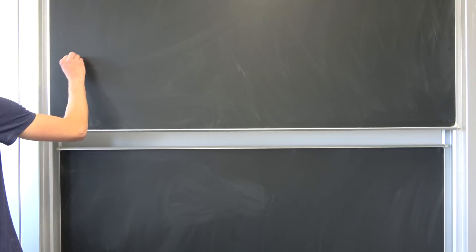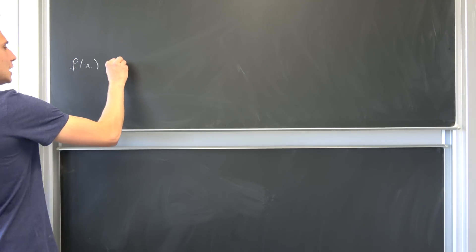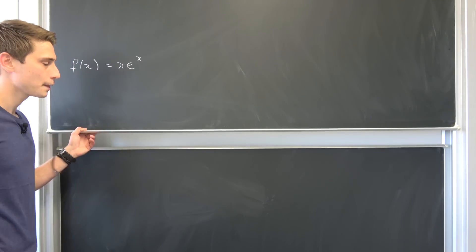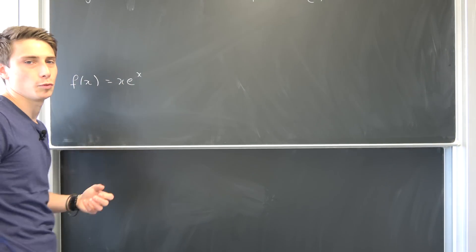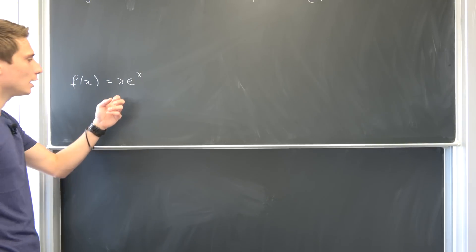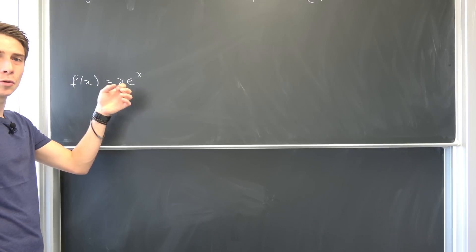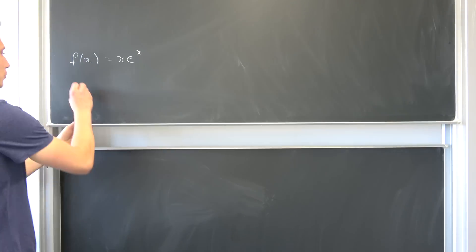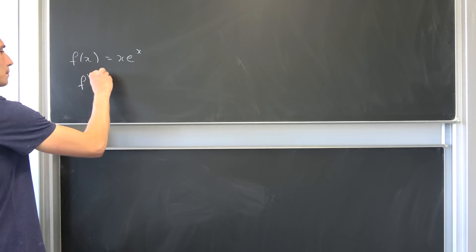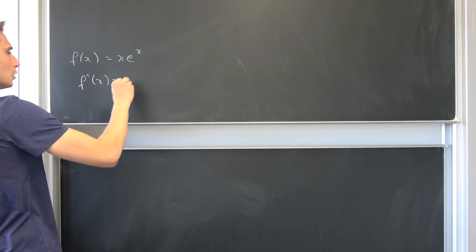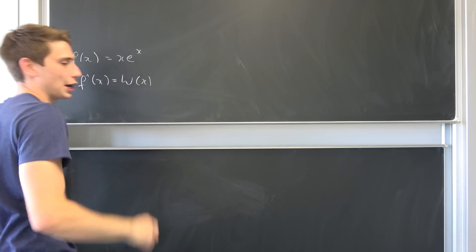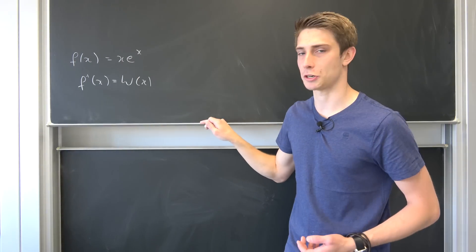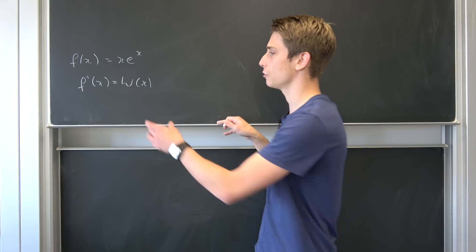So if you take the function f of x being equal to x times e to the x. This thing isn't really solvable. It's quite hard to solve. And we can define an inverse function of that thing. And this inverse function we are going to call it w of x. This is the Lambert w function.